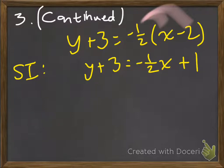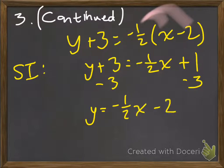Is the y by itself yet? No. There's still a plus 3 here that we have to worry about. So we're going to subtract 3 and subtract 3, and we get y = -1/2x - 2. And now it's in slope intercept form.